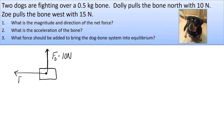F sub Z for Zoe is 15 newtons — capital N for Sir Isaac Newton. So, what is the magnitude and direction of the net force? Now we're ready to do the vector sum.